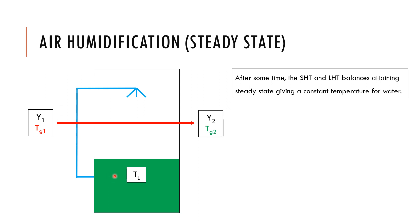To remind you what steady state means: the temperature and other parameters do not change with time. If I place a thermometer at a fixed point in the airflow, initially until the system reaches steady state the temperature will change, but once steady state is achieved it will not change with time. In the steady state, the temperature of the liquid remains constant, and the temperature of the air at the exit also remains constant.